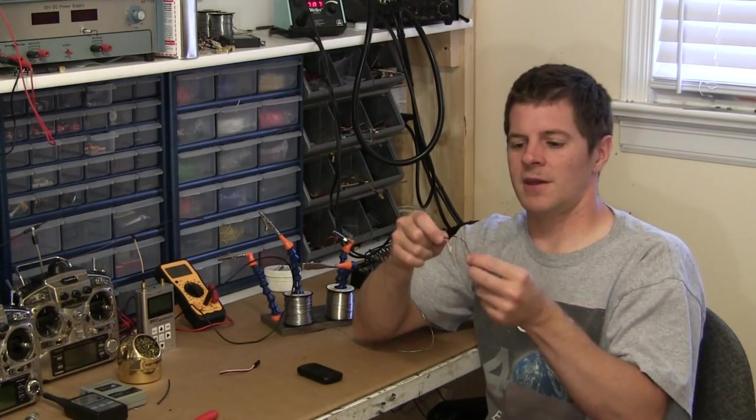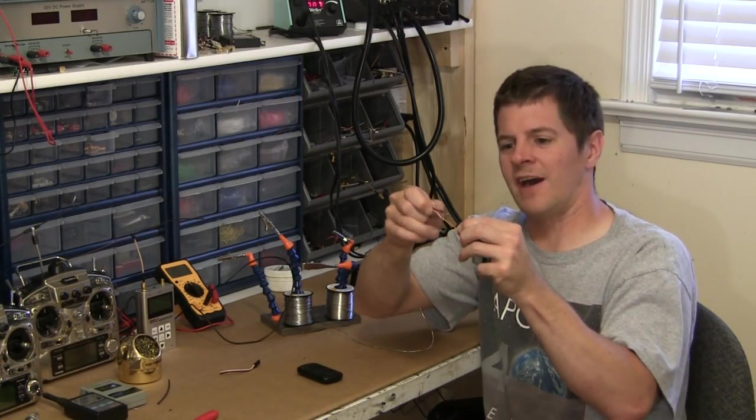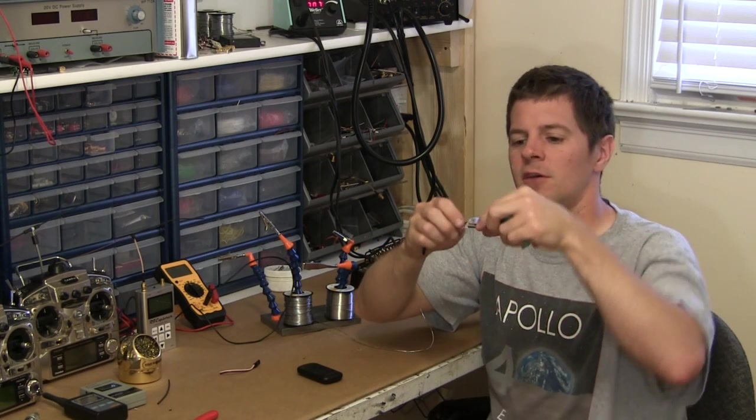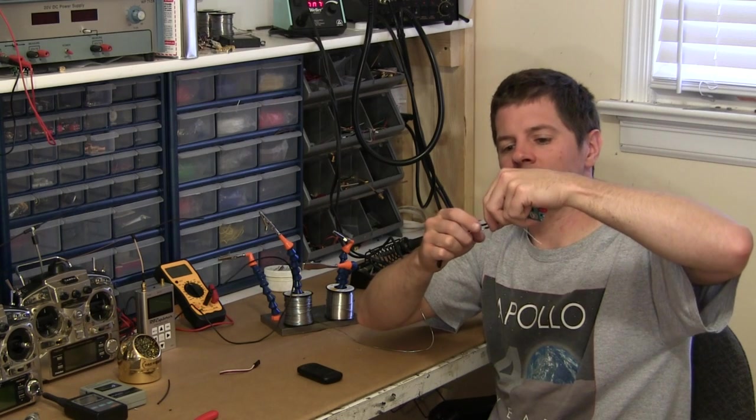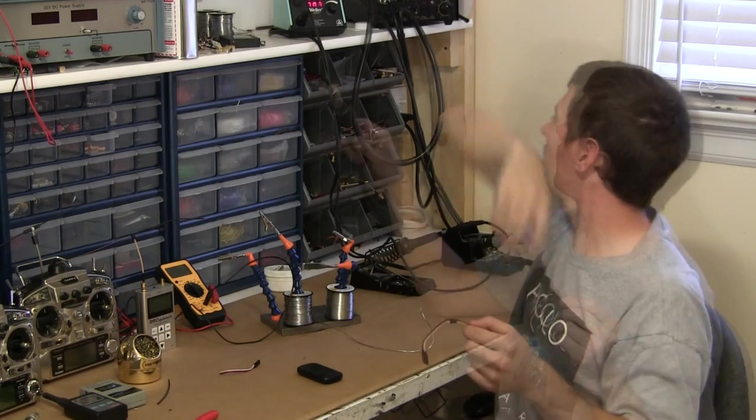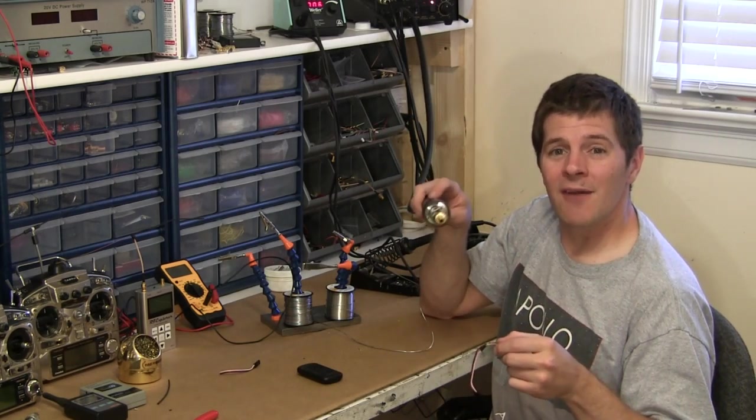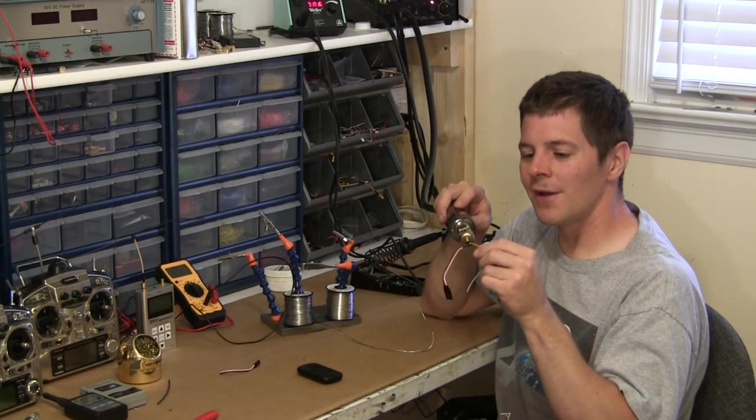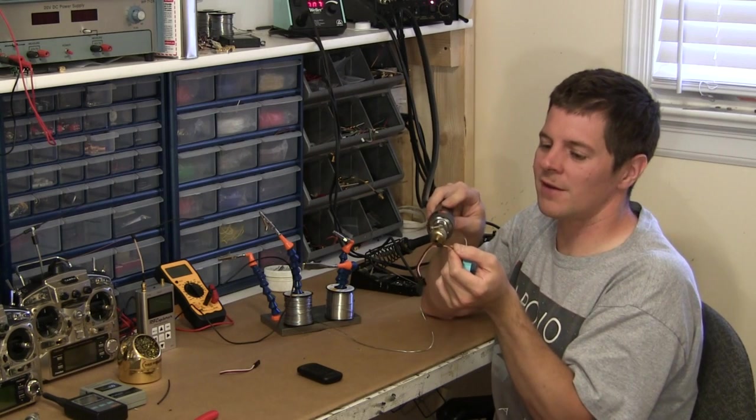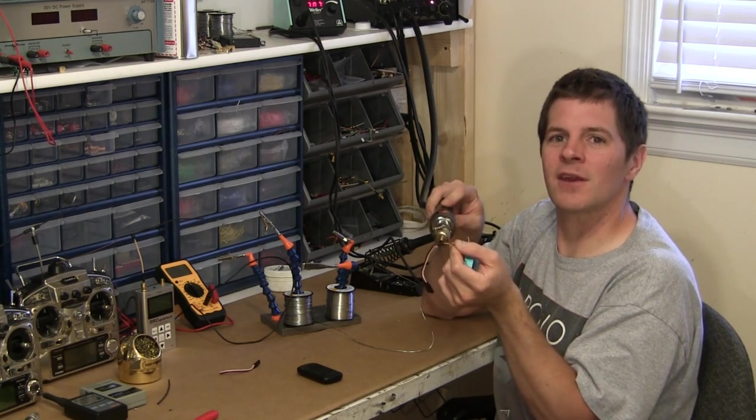Once completed, give your wires a good tug to be sure they're on their good. Once they're on, slide your heat shrink over. And if you happen to have a hot air rework tool or a heat gun or even a lighter, those are all great to heat up your heat shrink and shrink it down.